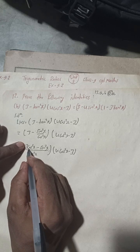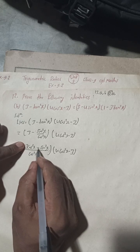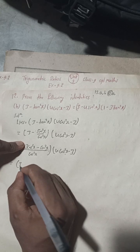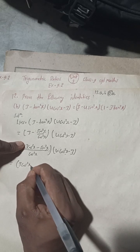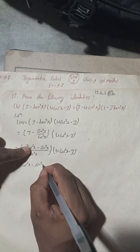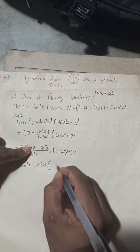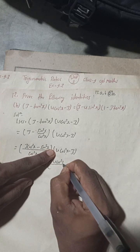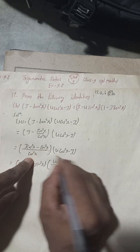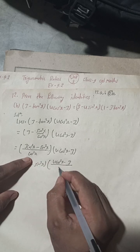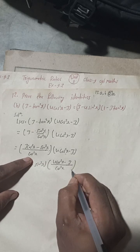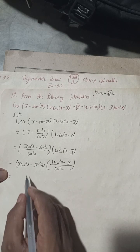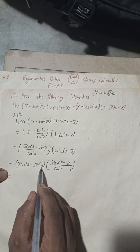So we have (3cos²x - sin²x) and then (4cos²x - 3). Taking cos²x from the denominator to this side, we can now write 3cos²x minus sin²x in the numerator.